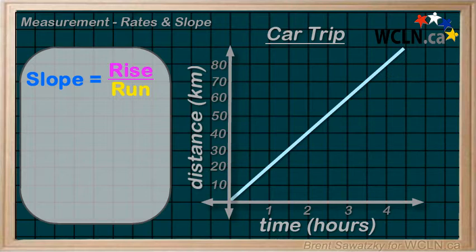So let's look at this example. This is the graph of a car's distance in kilometers versus the car's time of travel in hours.